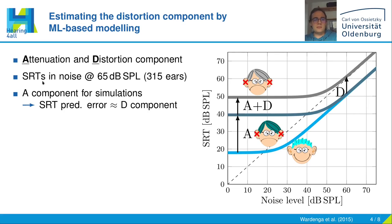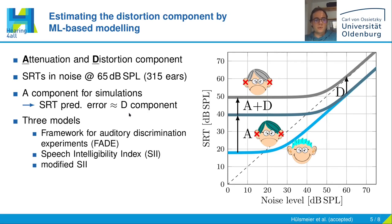What we did: we took SRTs measured in stationary noise presented at 65 dB SPL from 315 different ears. Our assumption for modeling was that if we just use the absolute hearing threshold — so just the A component for the simulations — then the model's prediction error reflects, to some extent, the D component. We used three different models: namely the Framework for Auditory Discrimination Experiments (FADE), which is a machine learning-based approach that can consider both the A and D component, although we just used the A component here, and the Speech Intelligibility Index (SII) and a modified version of it, both of which can only use the A component for making predictions.